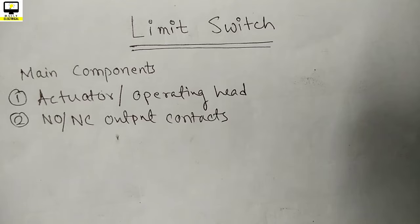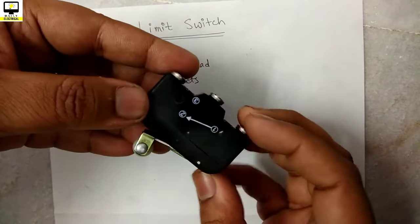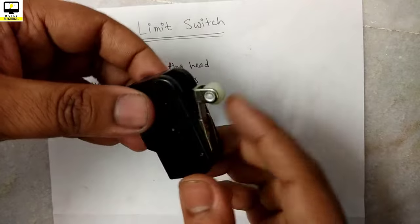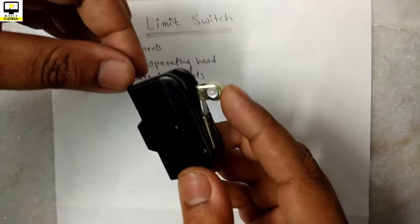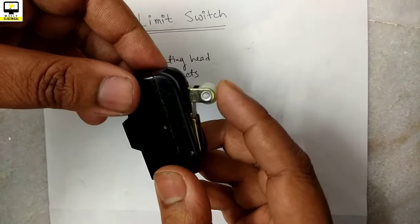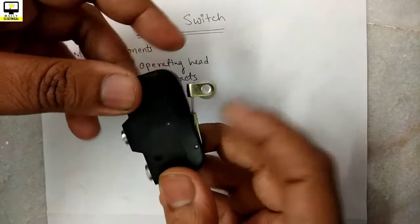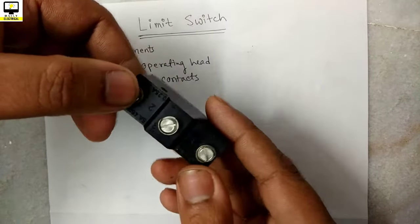Let us see the example in live. Now we have a roller type limit switch here. As you can see, it is the actuator or operating head. When a pressure is applied, it can switch and the electrical outputs are provided.